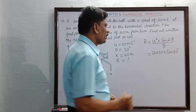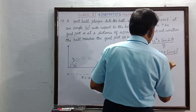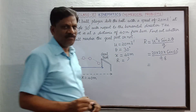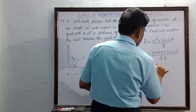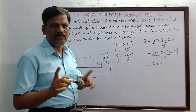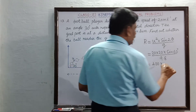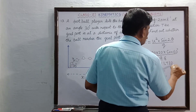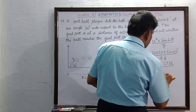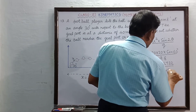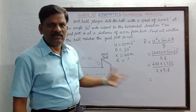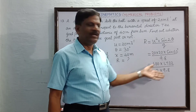So 2theta is 60 degrees, and g is taken as 9.8. So we have 400 × sin(60°), which is root 3 by 2. The value of root 3 by 2 is 1.732, and the denominator is 2 × 9.8.